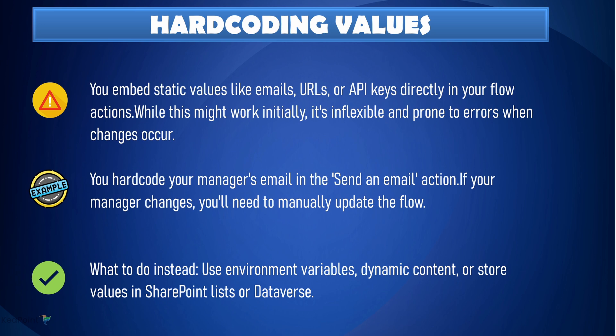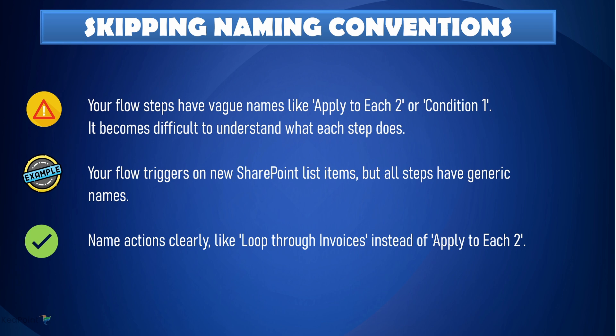This ensures flexibility and easier maintenance. Second: stop skipping naming conventions. We have all been there, leaving generic names like 'Apply to each 2' or 'Condition 1' in our flows. This can become confusing quickly, especially when troubleshooting. Instead, use clear and meaningful names. For instance, instead of 'Apply to each 2,' rename it to something like 'Loop through invoices.' This way you know exactly what the step is doing, and it will make debugging and future editing much easier.